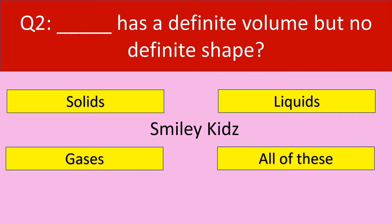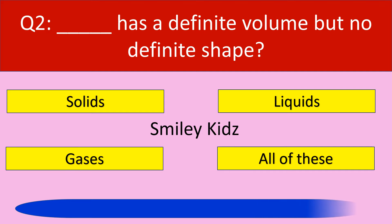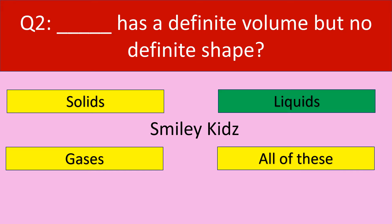Question number two. Dash has a definite volume but no definite shape. Options are solids, liquids, gases, and all of the above. Your time starts now. Your time is up. The correct answer is liquids. Liquids have a definite volume but no definite shape.